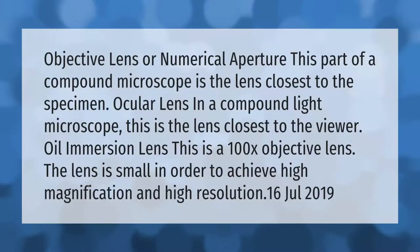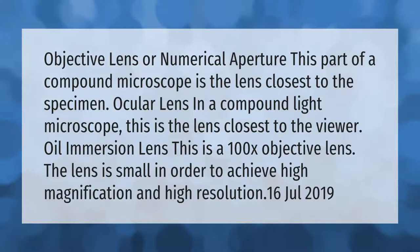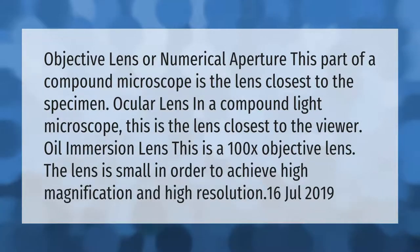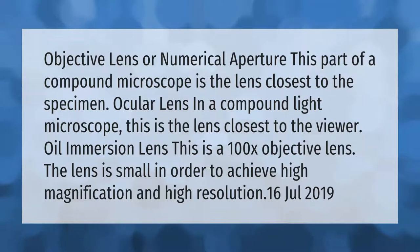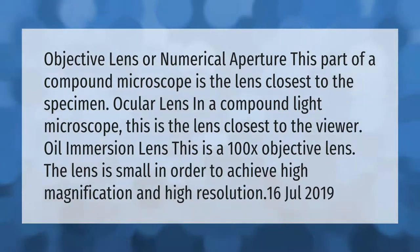The objective lens, or numerical aperture, is the part of a compound microscope that is the lens closest to the specimen. The ocular lens in a compound light microscope is the lens closest to the viewer.